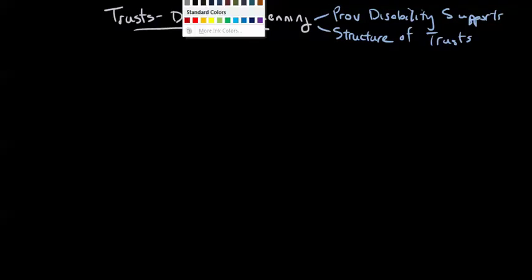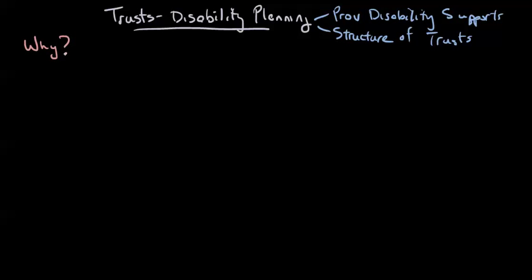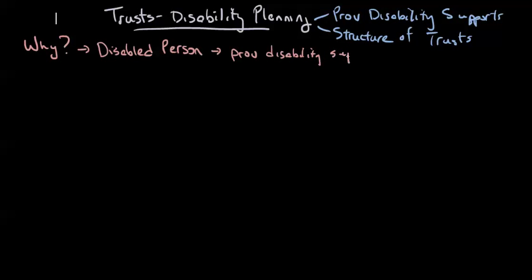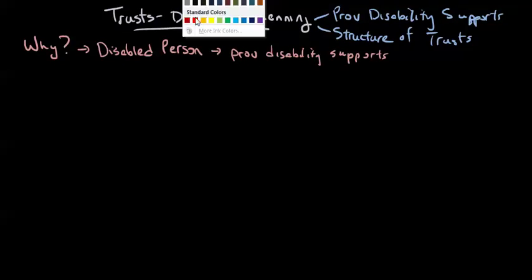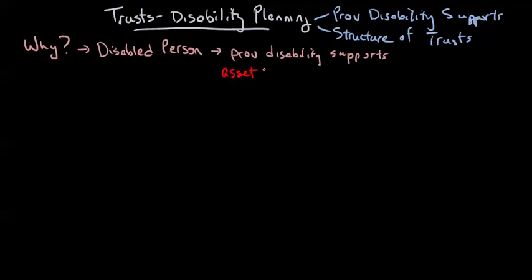What we're going to look at here is why do we need trusts at all in a disability plan. The reason we're going to focus on for starters is: we have a disabled person and regardless of competency or whether that person has decision-making capability, the disabled person may be relying on provincial disability supports. These provincial disability supports vary quite a bit from province to province, but in general they will limit your ability to access those benefits based on assets and income — so we're going to have both an asset and an income test.